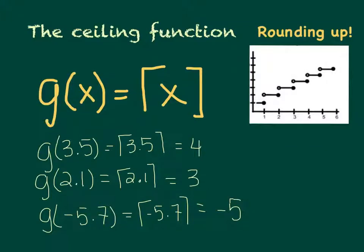Our other important type of step function is called the ceiling function, very predictably. In this case, instead of rounding down, we're going to be rounding up. So we always go to the next bigger integer. And this time, it's written as a vertical line with a little hat thing on the top. There's no little foot. It's just a hat at the top.